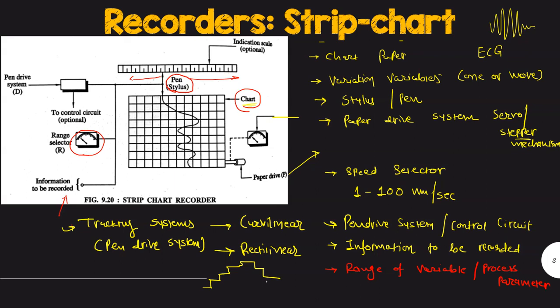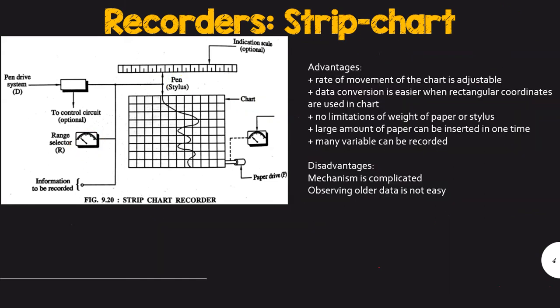Now let us see the advantages and disadvantages of strip chart recorder. Very first advantage of this strip chart recorder system is the rate of movement of chart is easily adjustable because we are using servo mechanism. Data conversion is easier when rectangular coordinate systems are used particularly in charts. For the quantities you are plotting on this chart, you will have easy idea about the proportional magnitude of the quantity when you are using rectangular coordinate system for the charts.